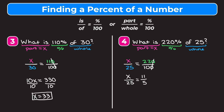I'll show a shortcut: proportions are equivalent fractions, so something over 25 has to equal 11 over 5. To get from 5 to 25 we multiply by 5, so we must also multiply 11 by 5, giving X equals 55. Checking: 220% is more than 200%, and 200% of 25 is double it, which is 50. So our answer should be over 50, and 55 is over 50. So our answer makes sense.